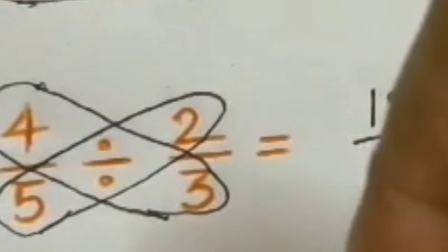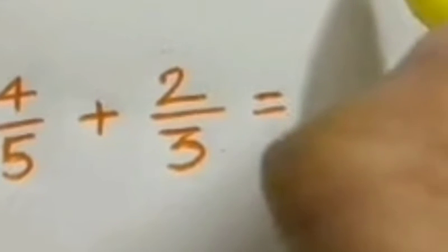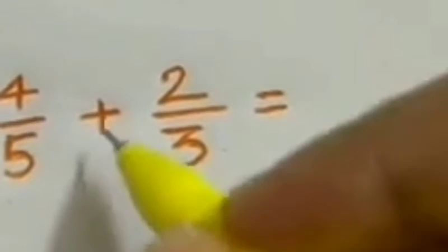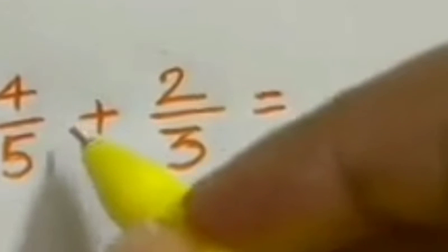So we have to move forward to our third one. Four to the fraction of five plus two to the fraction of three. We have to multiply again.